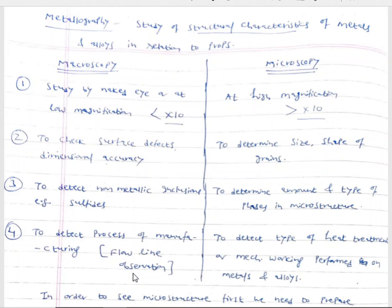The magnification is written as, for example, cross 10, meaning the lens magnifies the image by 10 times, so a 10 times enlarged image will be seen under the microscope. In microscopic examination, the study is made at magnification above 10.